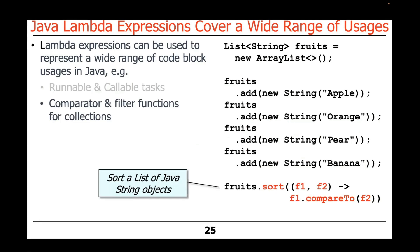You can also use lambda expressions as comparator and filter functions for Java collections. Here, for instance, we make a list of fruits and add some — apple, orange, pear, banana, and so on — and then sort it, passing in f1 and f2 for fruit one and fruit two, doing a case-sensitive comparison using a lambda expression.